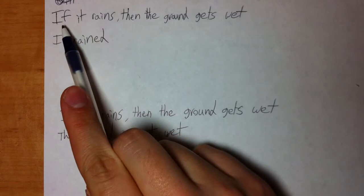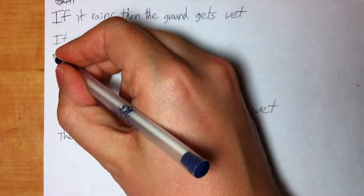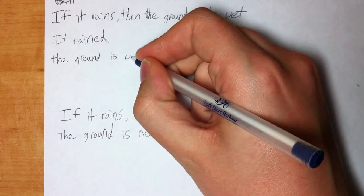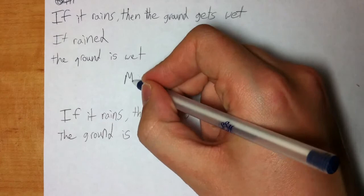Our first rule — look at the first example. If it rains, then the ground gets wet. It rained. So if you knew both these things in English, what would you logically conclude? You'd conclude that the ground is wet, because if it rains then the ground gets wet, and it rained — therefore the ground got wet. This rule is called modus ponens, or we abbreviate it as MP.